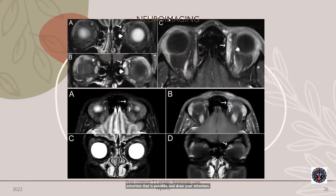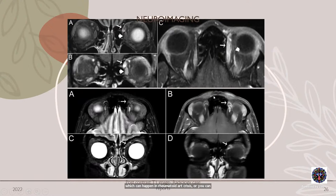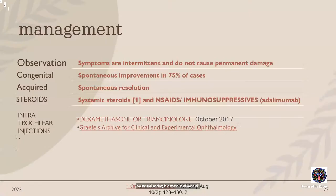Neuroimaging is very important in acquired Brown syndrome. This radiology case report shows an inflamed superior oblique muscle in rheumatoid arthritis, or trochleitis on MRI. Neuroimaging is a must in almost all cases of acquired Brown syndrome or when there is clinical suspicion.